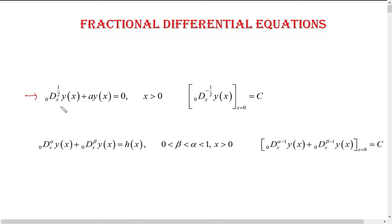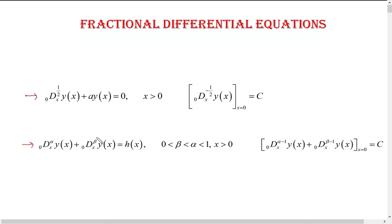Here you can see the first fractional differential equation — this is the simplest one. It has constant coefficients, it is homogeneous, and it is linear, with one initial condition given which also involves the fractional derivative. There is one more fractional differential equation where we have two terms involving the fractional derivative, with orders alpha and beta both between 0 and 1, and a relevant initial condition. This one is non-homogeneous with constant coefficients. There are also linear and non-linear fractional differential equations, as well as fractional partial differential equations.